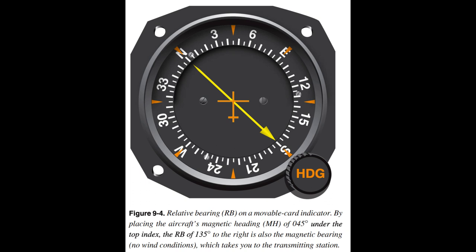A movable card ADF indicates a heading of 045 degrees, MB to the station of 180 degrees, and MB from the station of 360 degrees. The RMI differs from the movable card ADF in that it automatically rotates the azimuth card, remotely controlled by a gyrocompass, to represent aircraft heading. The RMI has two needles which can indicate navigation information from either the ADF or the VOR receiver. When a needle is driven by the ADF, the head indicates the MB to the station; the tail is the bearing from the station. When driven by a VOR receiver, the needle indicates where the aircraft is radially with respect to the VOR station.